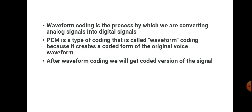Waveform coding involves sending an analog signal. When it is an analog signal, there are values at all times — it is analog in nature. If it is continuous in time and continuous in amplitude, there is an analog signal.